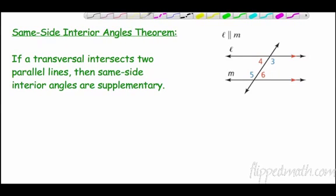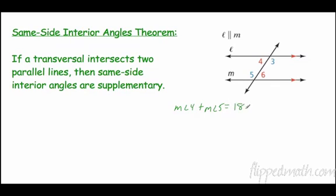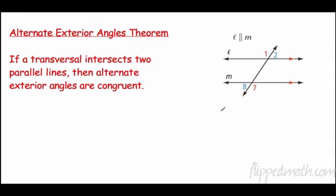All right, here's another one. Same side interior angles. If a transversal intersects two parallel lines, then same side interior angles are supplementary. So same side. 4 and 5 are same side. So what it says is that the measure of angle 4 plus the measure of angle 5 is supplementary. Meaning, how many degrees is supplementary? 180. Likewise, 3 and 6. So the measure of angle 3 plus the measure of angle 6 equals 180. Which is nice because now if I knew angle 4, I could plug in what the measure of angle 4 is, subtract it from 180, and find out what I had.